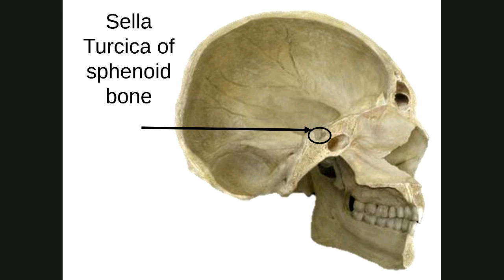On a mid-sagittal cut, there's a structure called the sella turcica, which stands for 'Turkish saddle.' It's part of the sphenoid bone. There's a gland called the pituitary gland that sits right there in the sella turcica. The pituitary gland has a lot to do with endocrine function and certain hormones.